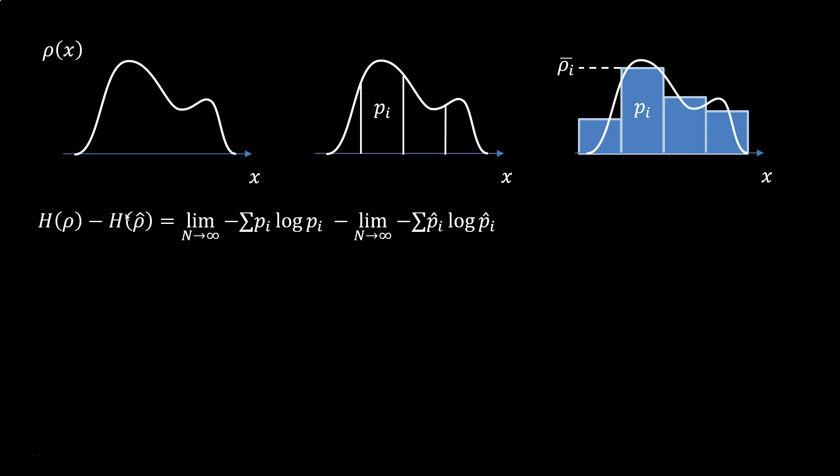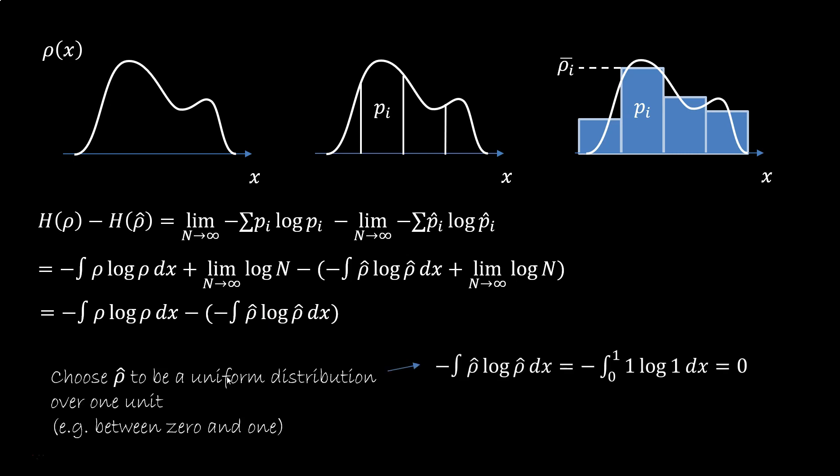Suppose we take the limit of the difference of the entropy of two distributions. This will be the difference of the limits. The divergent part is the same, so it cancels out. Technically we are taking the difference before the limit, cancel it there, and then we take the limit. But the point is that the difference of entropy is the difference between the integral minus rho log rho and minus rho hat log rho hat. Now we choose rho hat to be a uniform distribution over one unit, for example between zero and one. If you calculate the integral, you see that it's zero. So the integral of minus rho log rho is not the variability of the distribution in absolute, but the difference in variability from a uniform distribution over a unit interval.